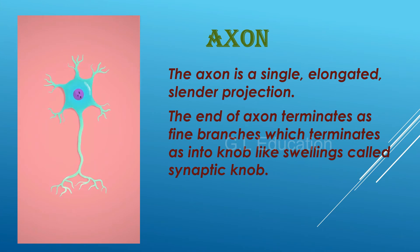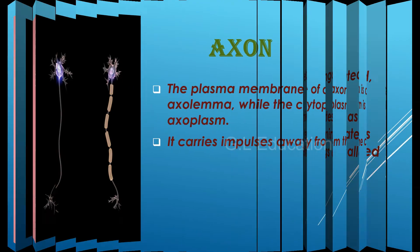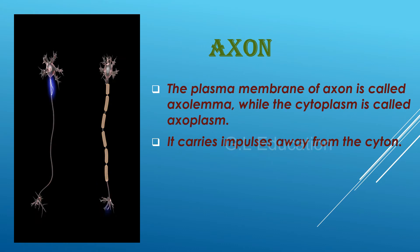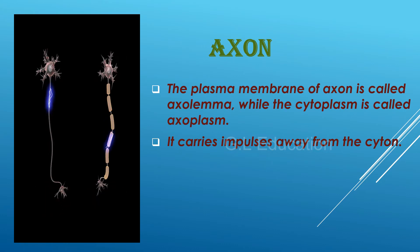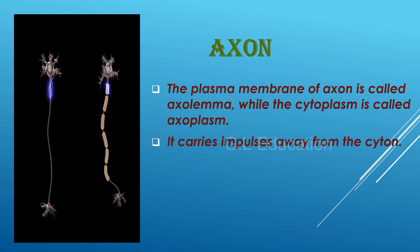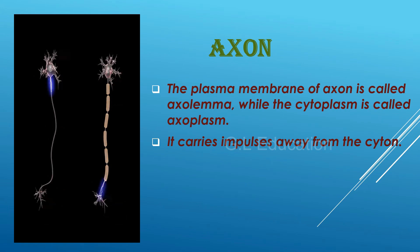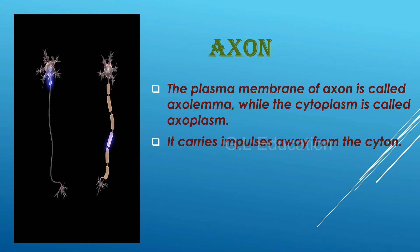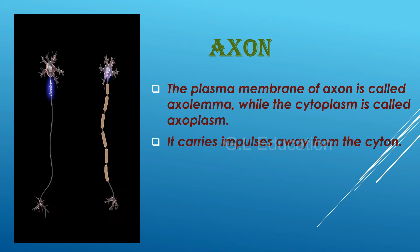The axon is a single, elongated, slender projection. The end of the axon terminates as fine branches which end into knob-like swellings called synaptic knobs. The plasma membrane of the axon is called axolemma while the cytoplasm is called axoplasm. It carries impulses away from the cytone.